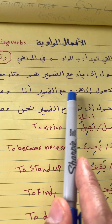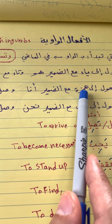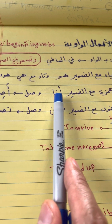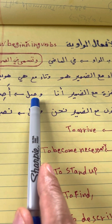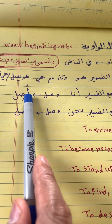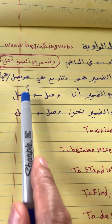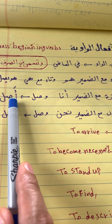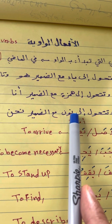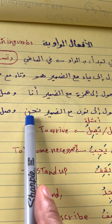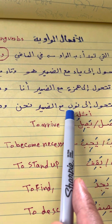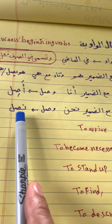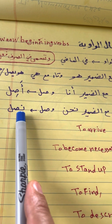It also transfers to hamza with the pronoun ana (first person singular). So waasala becomes asil, ahib, or adha. And it transfers to nun with the pronoun nahnu (we), so waasala becomes nahnu nasil.